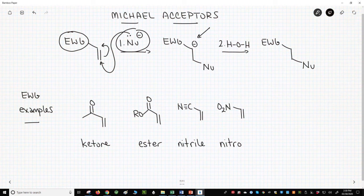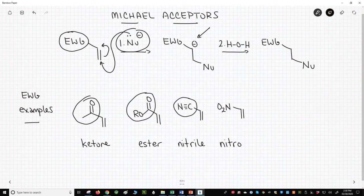The EWG can be almost any strong EWG. I tend to think about meta-directors from aromatic reactions. Examples at the bottom include ketones, esters, nitriles, and nitro groups, among others.